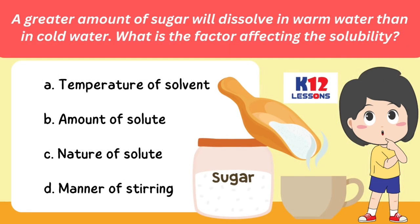A greater amount of sugar will dissolve in warm water than in cold water. What is the factor affecting the solubility? A. Temperature of solvent. B. Amount of solute. C. Nature of solute. D. Manner of stirring.